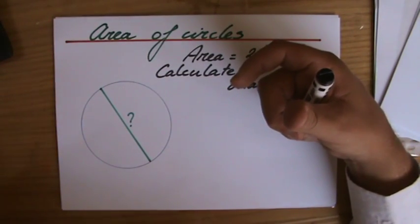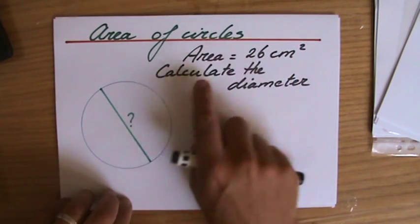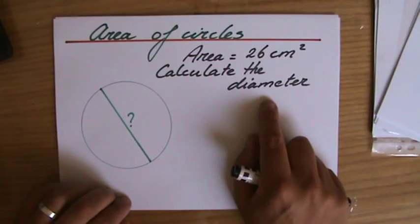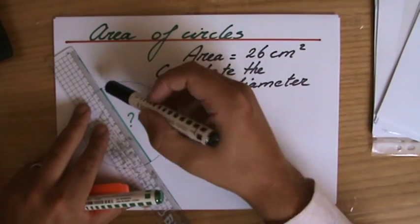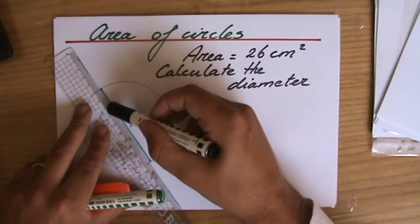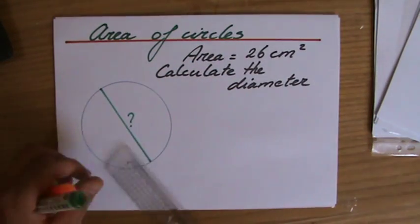Instead of asking me to calculate the area, they already give me 26 centimeters squared. Now, what is the question? Calculate the diameter. And I already drew the diameter - that line from the circumference through the midpoint to the other side, to the circumference there. That's the diameter.